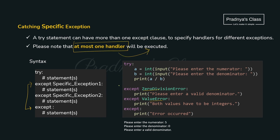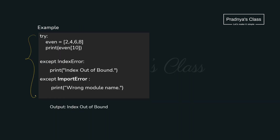We can have more than one except block. Generally we write the specific exception at the beginning and the generalized one at the last. If the first exception does not match, it will check for the second one. If that also doesn't match, it will come to the generalized one — from top to bottom the exceptions will try to match. In this example we will get IndexError because we are trying to access the tenth index which doesn't exist in the list. The last generalized except block is optional.